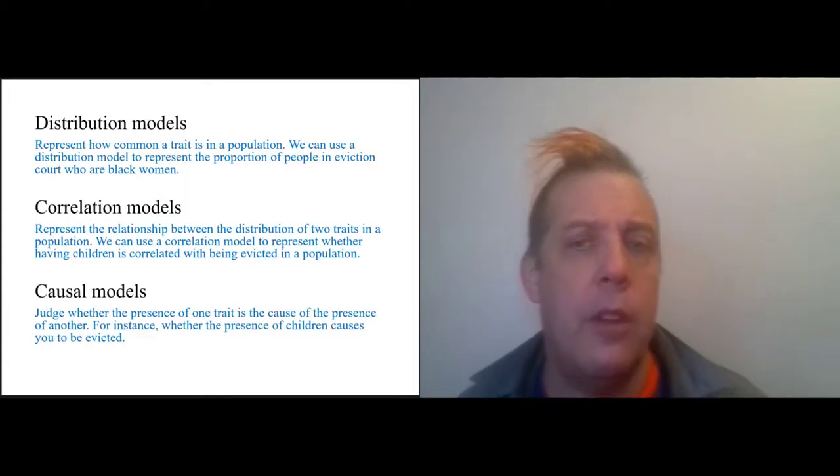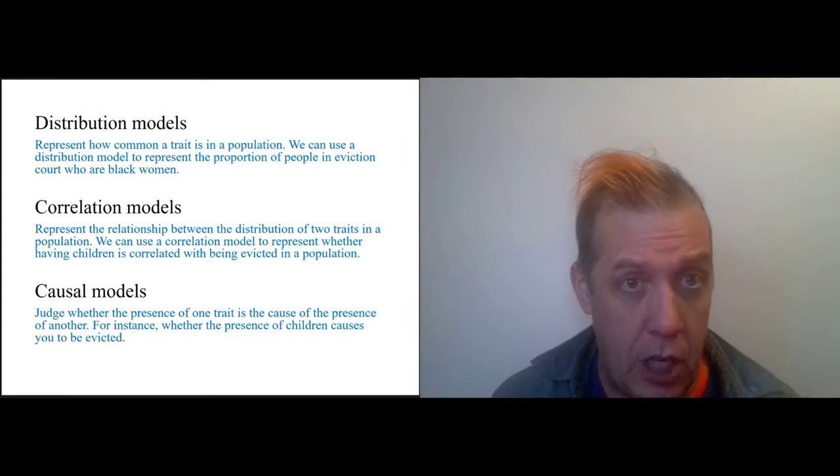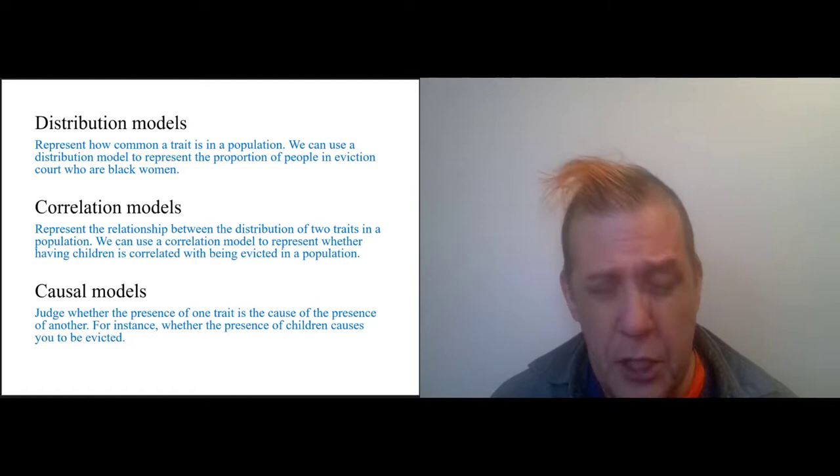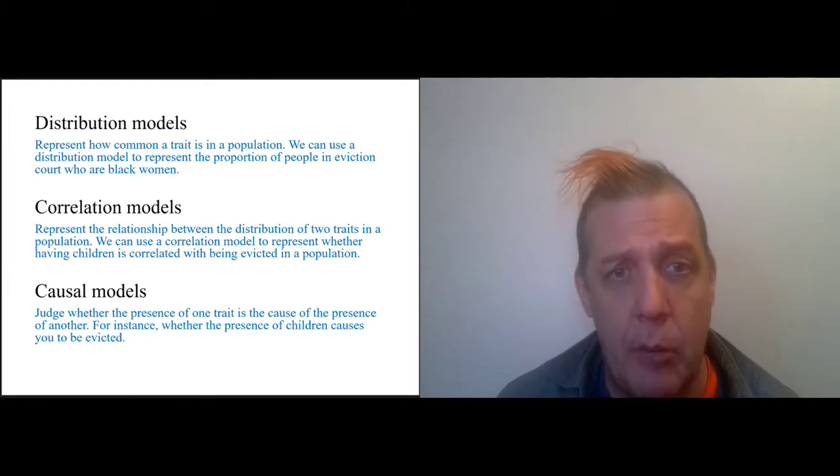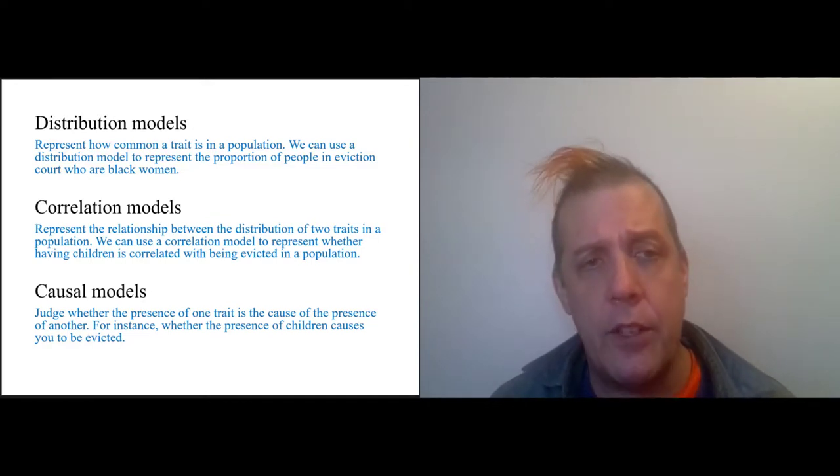We talked previously about distribution models, correlation models, and causal models. A distribution model simply says how common a trait is in a population. So when we say that one in eight Milwaukee renters experienced a forced move during a two-year period, that is a distribution model. It says how widely a property—experiencing a forced move—is distributed amongst a population: Milwaukee renters.